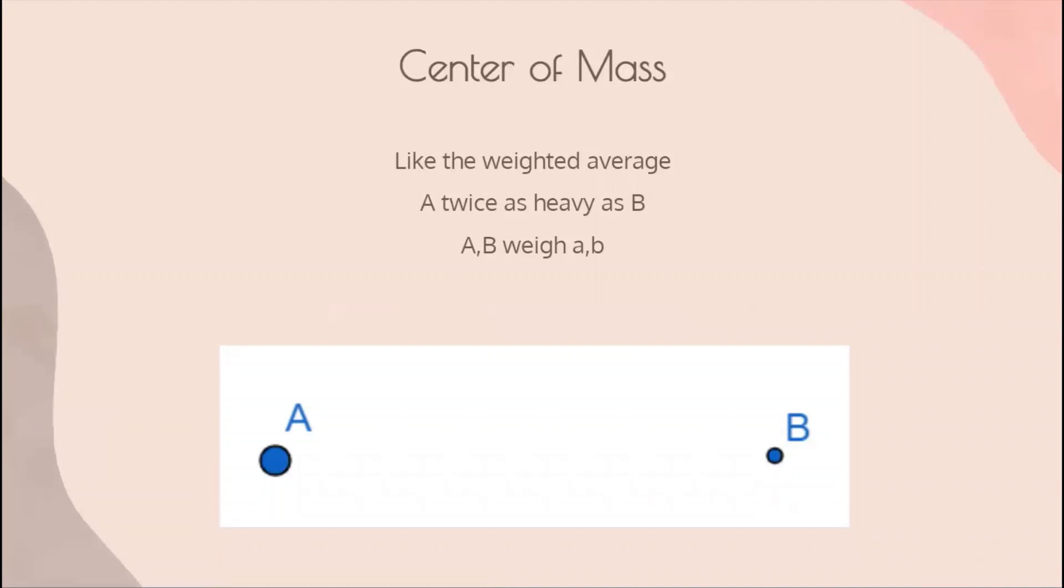First, let's think about mass. More specifically, the center of mass, which is basically like a weighted average. We'll explain this with an example. Let's say we have two points, A and B, and A is twice as heavy as B. Where would their center of mass be?